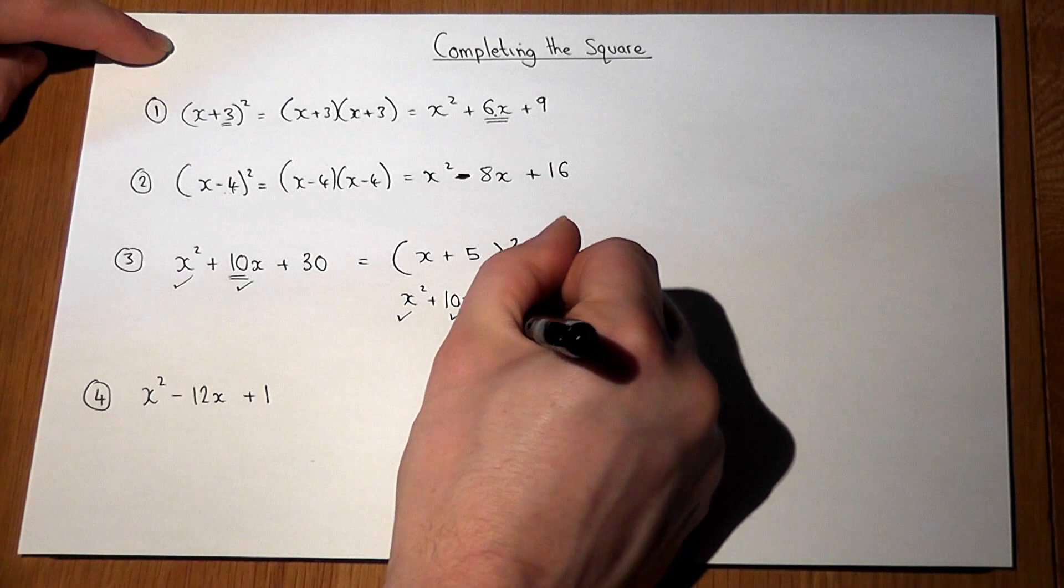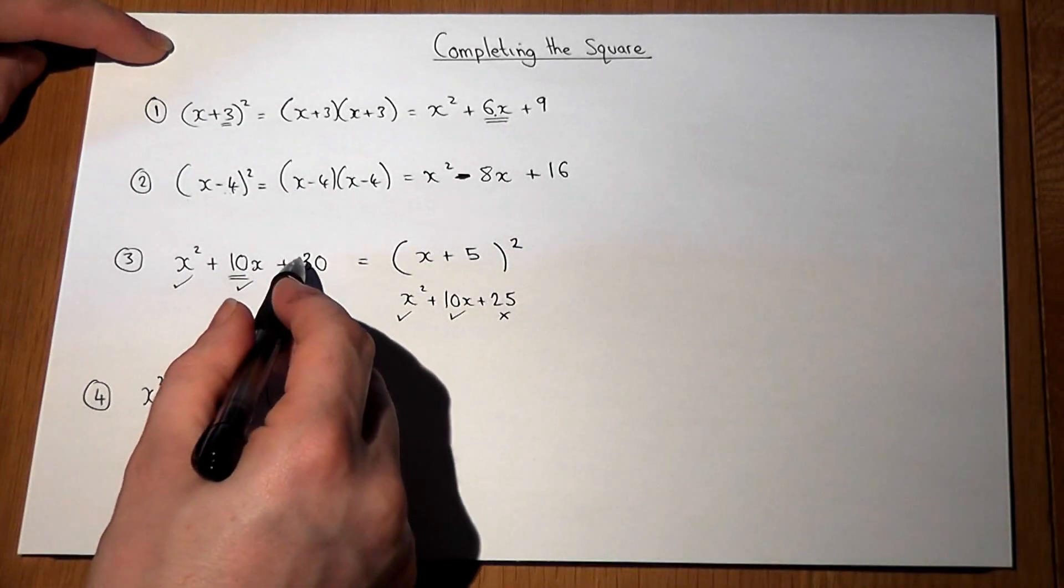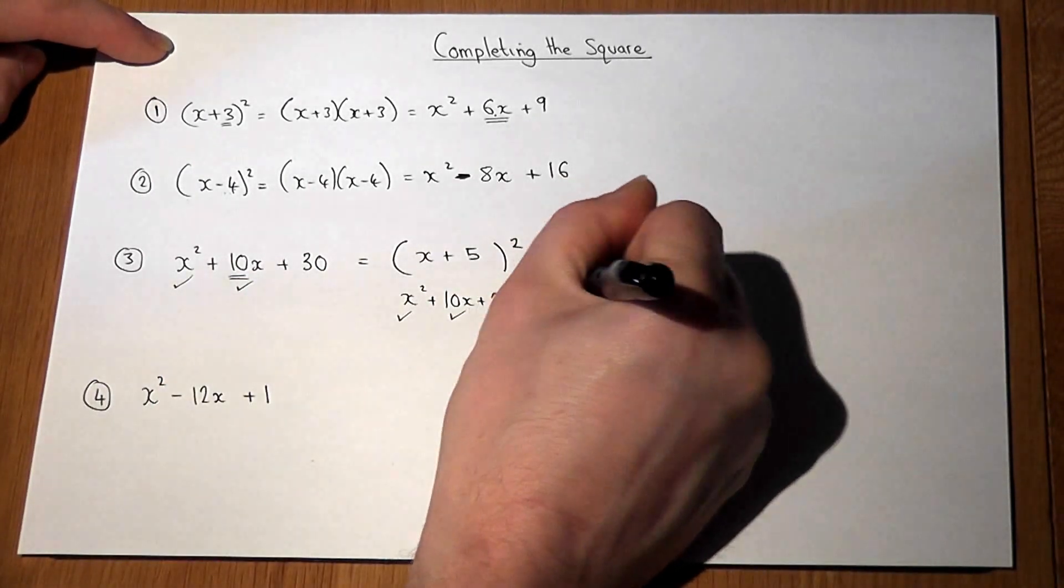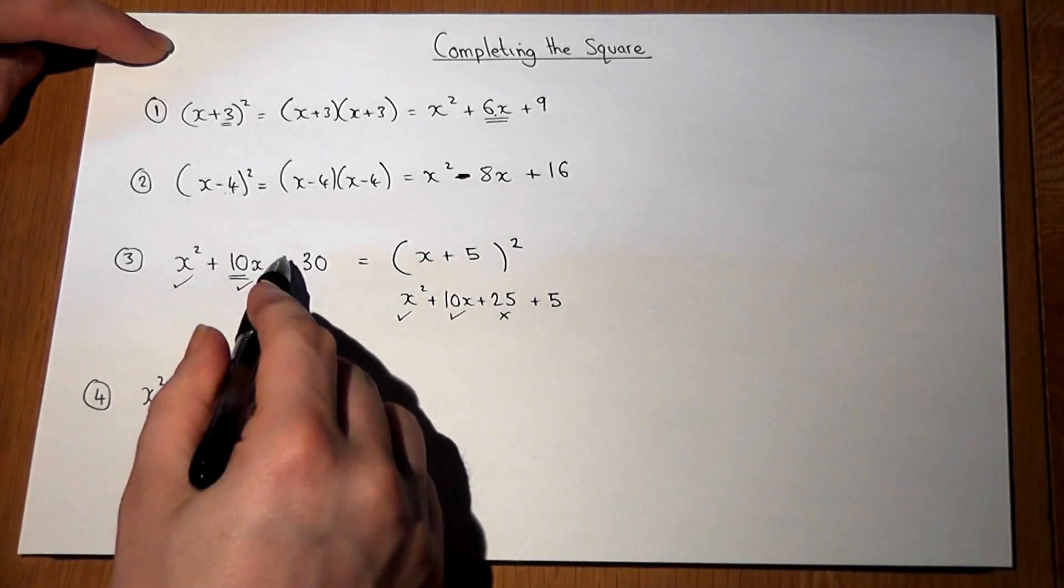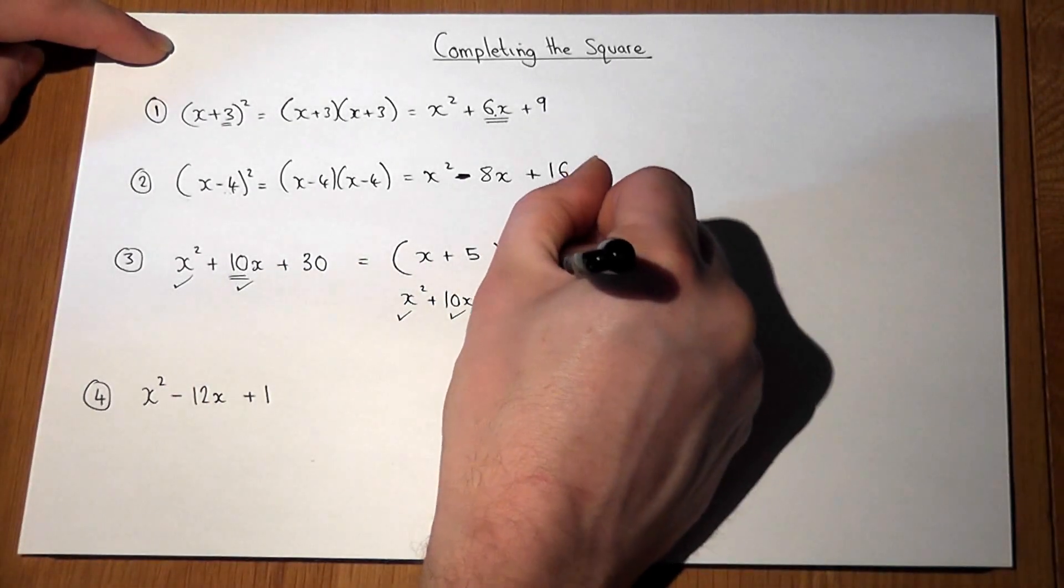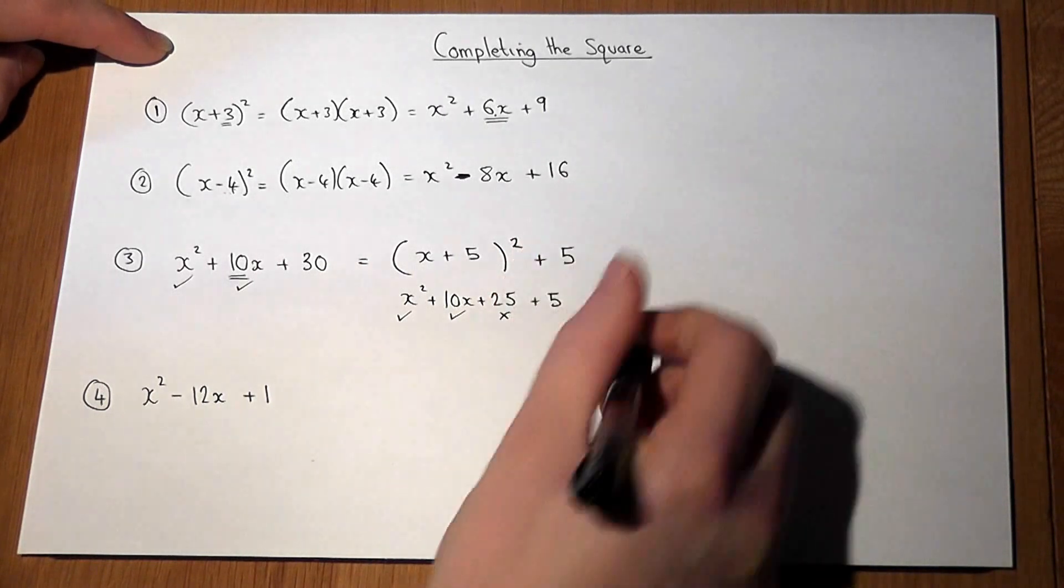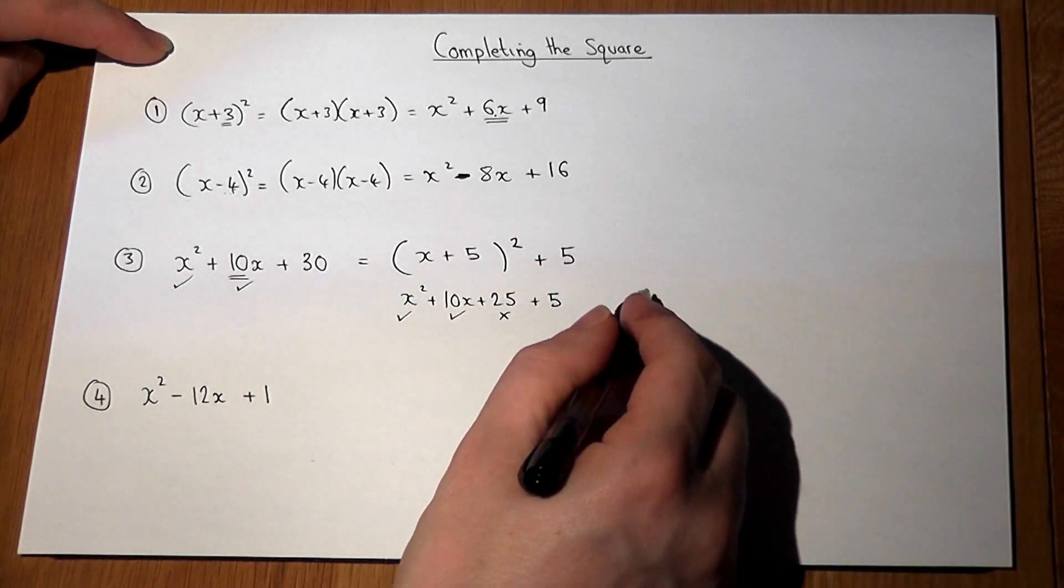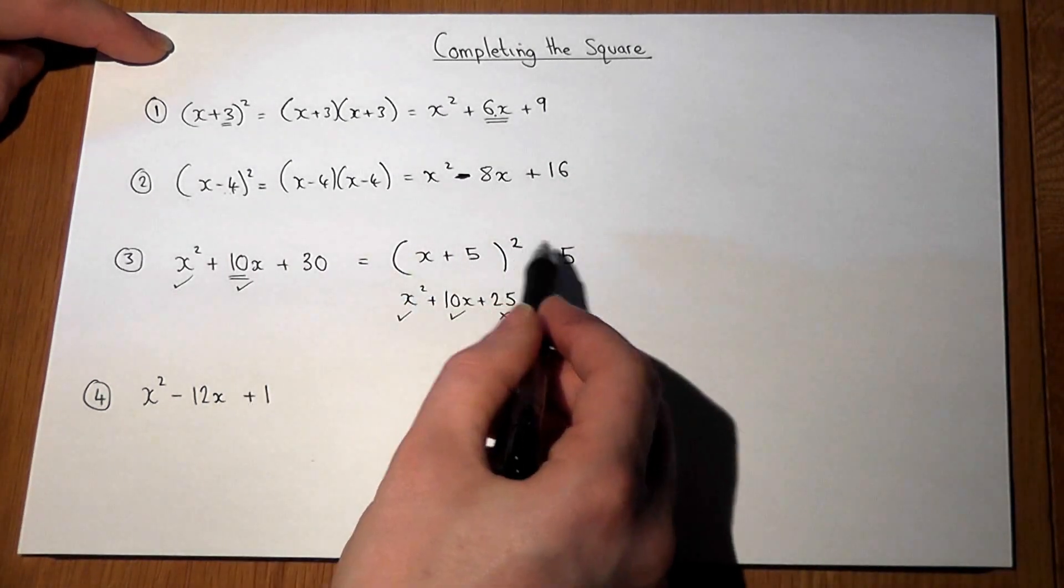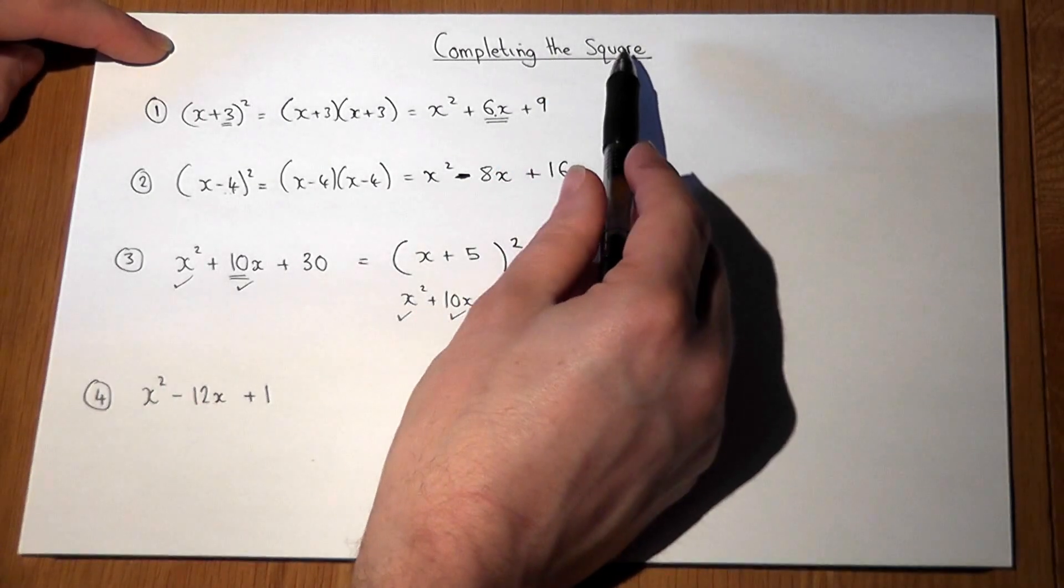But we've got a 25, not a 30. So we have to add on an extra 5 to make these two expressions the same. So I must plus a 5 on at the end to make them equal. And this process is called completing the square.